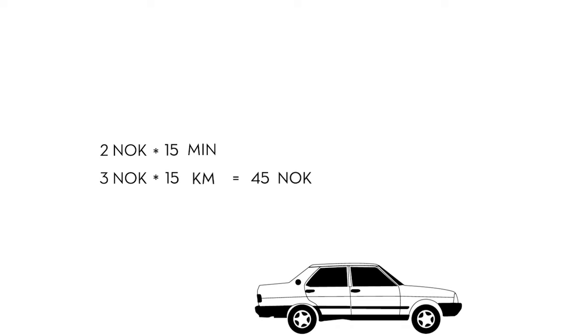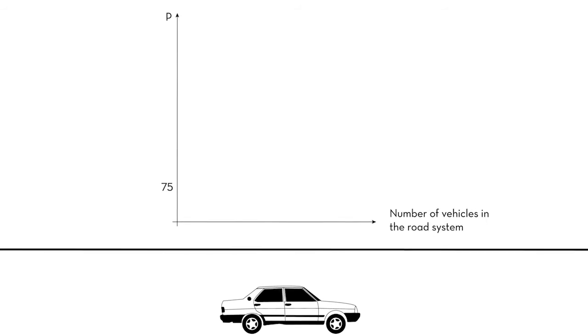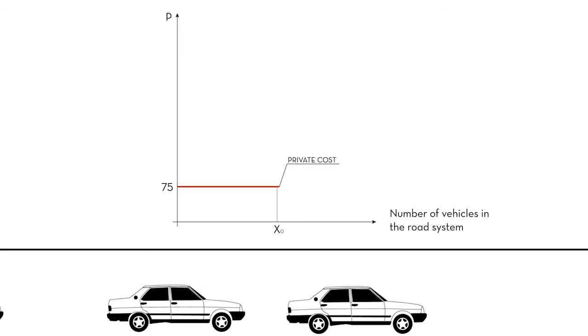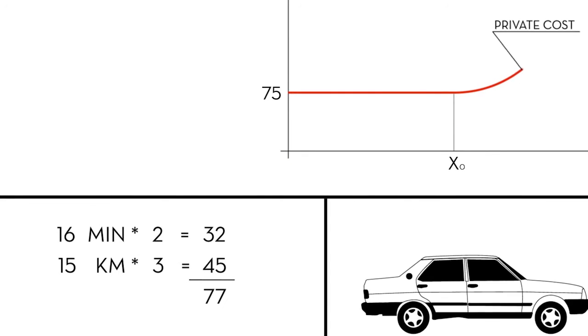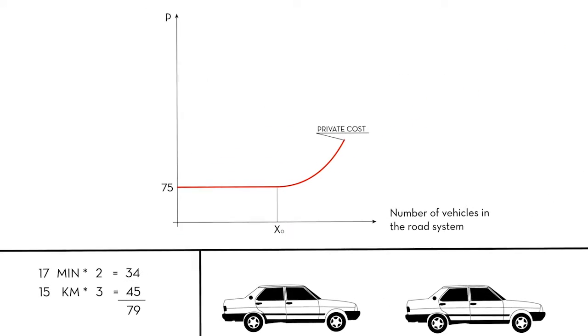However, the road system has a capacity limit, say 30,000 cars per period, or X0, beyond which queues start to form, slowing down the traffic. Then, the time costs of a trip starts to increase, and probably also petrol consumption per kilometer, illustrated by the increasing part of the curve.